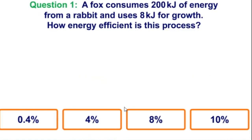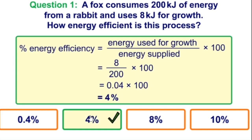Here's another example: a fox consumes 200 kJ of energy from a rabbit and uses 8 kJ for growth. Using the equation: 8 ÷ 200 = 0.04, multiplied by 100 gives 4%. So this process is 4% energy efficient.